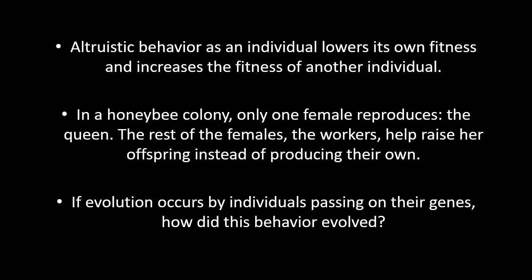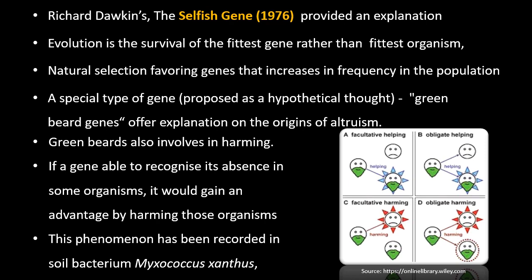The solution came from the gene's eye view of evolution, epitomized in the selfish gene. Evolution is not really about the survival of the fittest organism, but it is about the survival of the fittest gene, with natural selection favoring genes that are best able to make copies of themselves in the next generation — genes that increase in frequency in the population.